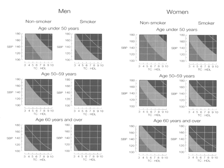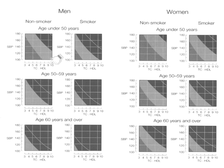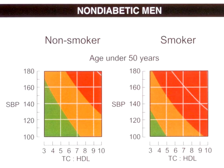We now have health checks from 40 years across the UK. So the doctor or the practice nurse identifies the patient's sex, age — under 50, 50 to 59, 60 or over — smoker or non-smoker, and then looks at the results of blood pressure and lipid measurements. So let's just take one segment of this chart. We're looking at men without diabetes aged under 50 years, smokers and non-smokers. What you see here is like a traffic light system.